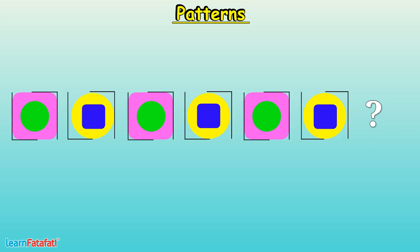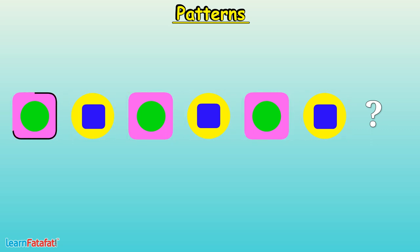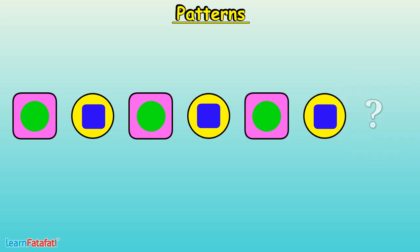Look at the outer figures. There is a square, then a circle, then a square and so on. So, after the last circle, there will be a square.